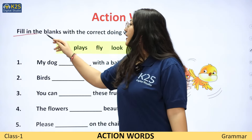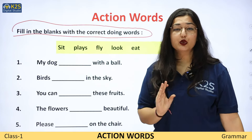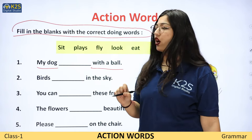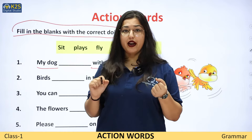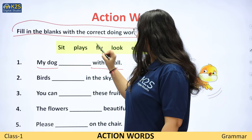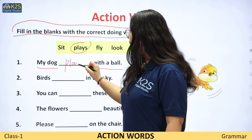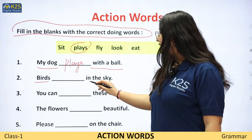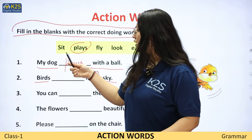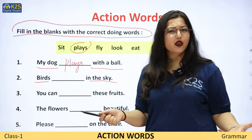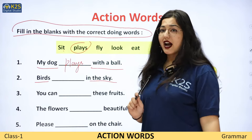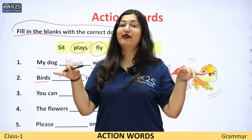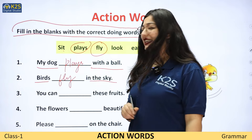Fill in the blanks with the correct doing words. Aapko yahan par correct words ke saath blanks ko fill karna hai. 'My dog ___ with a ball.' Ball ke saath dog kya kar sakta hai? Ek ball ke saath dog play kar sakta hai, khel sakta hai. Toh yahan pe likhenge: plays. 'My dog plays with the ball.' 'Birds ___ in the sky.' Birds kya kar sakte hai? Jo sabse zyada bird karte hai woh kya karte hai? Fly karte hai. Toh 'Birds fly in the sky.'